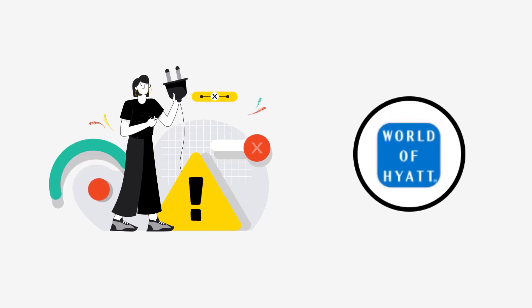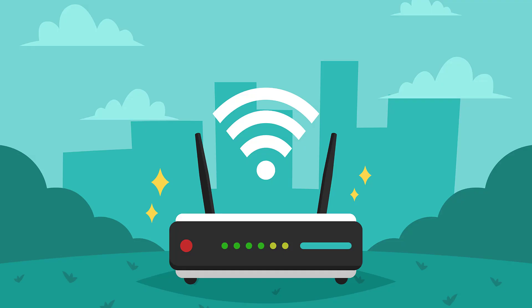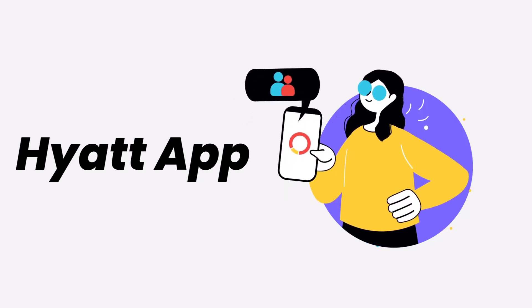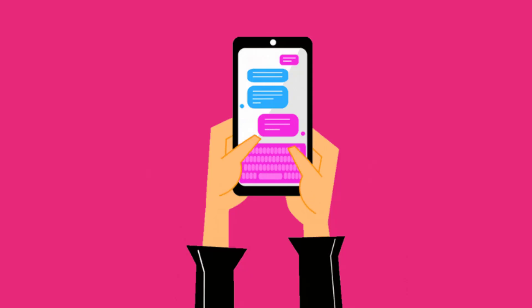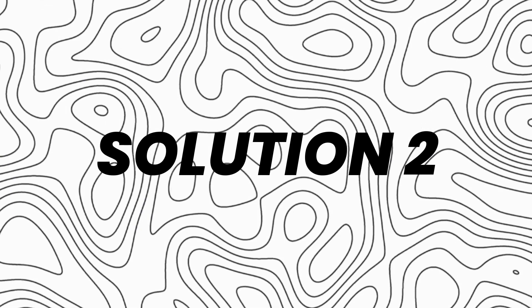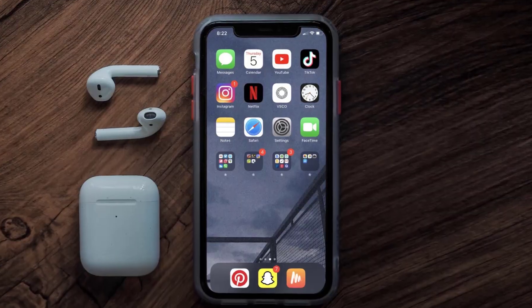It might be possible that you're not able to log into the Hyatt Hotels app due to a connectivity issue. First of all, you need to make sure you have a strong and stable internet connection. Do a quick test by opening an app that runs on the internet, other than the Hyatt Hotels app, and check if it's working. You can also try switching from Wi-Fi to mobile data and vice versa — doing this might help you log into your Hyatt Hotels app.